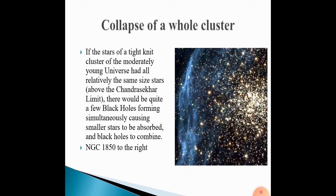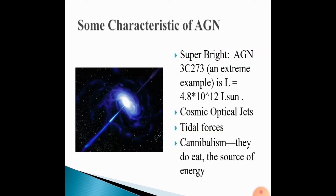Collapse of a whole cluster. If the stars of a tight-knit cluster of the moderately young universe had all relatively the same size stars, there would be quite a few black holes forming simultaneously, causing smaller stars to be absorbed and black holes to combine. NGC 1850 to the right.